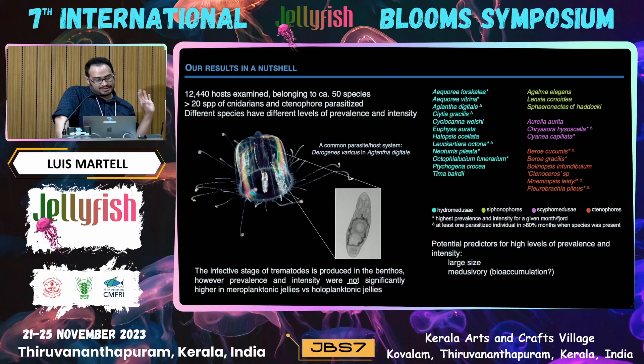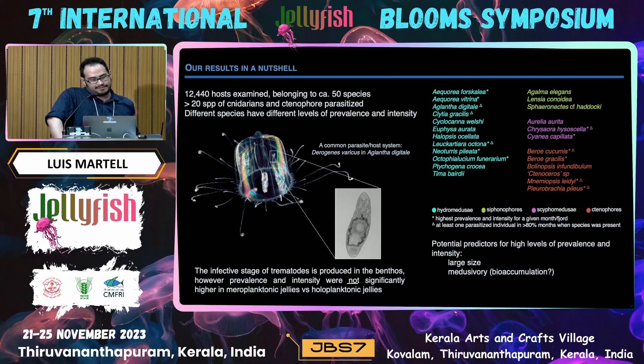The jellies belonged to approximately 50 species for this project, and about 20 of these species were parasitized — both cnidarians and ctenophores. This is the list of species: hydrozoans were the most common, then ctenophores, then some siphonophores, and scyphozoans.